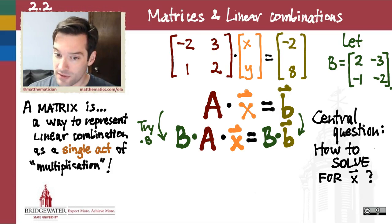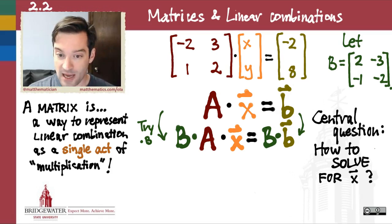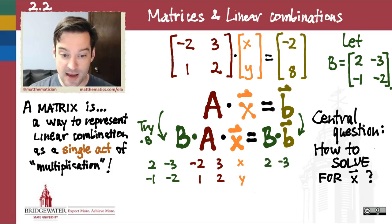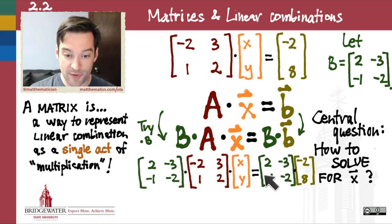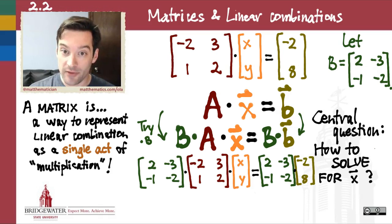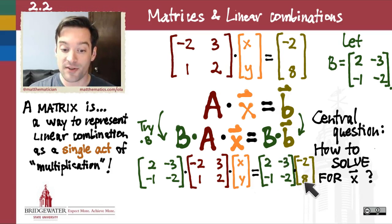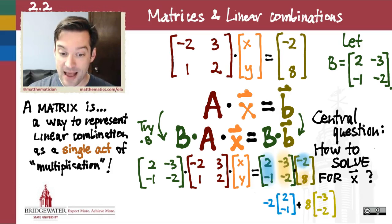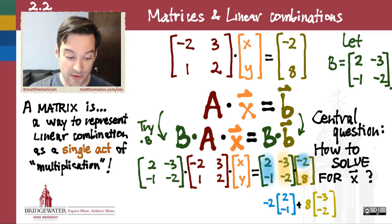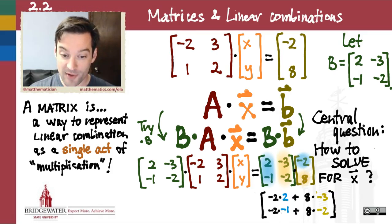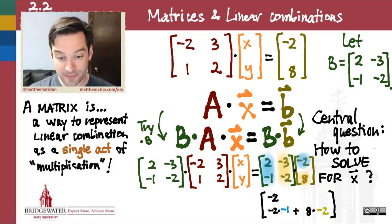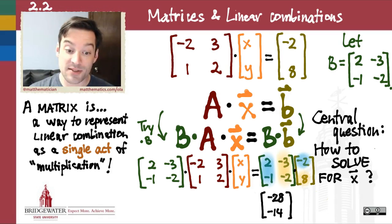Now there's a lot going on. On the right side we have our new matrix B multiplied by vector B, and we know how to do that. Matrix times vector means a linear combination of the columns whose weights are the entries of the vector: (-2) times the first column plus (-8) times the second column. Carrying out the scalar multiplication component-wise and adding the results gives us the vector (-28, -14). So we've simplified the right-hand side.